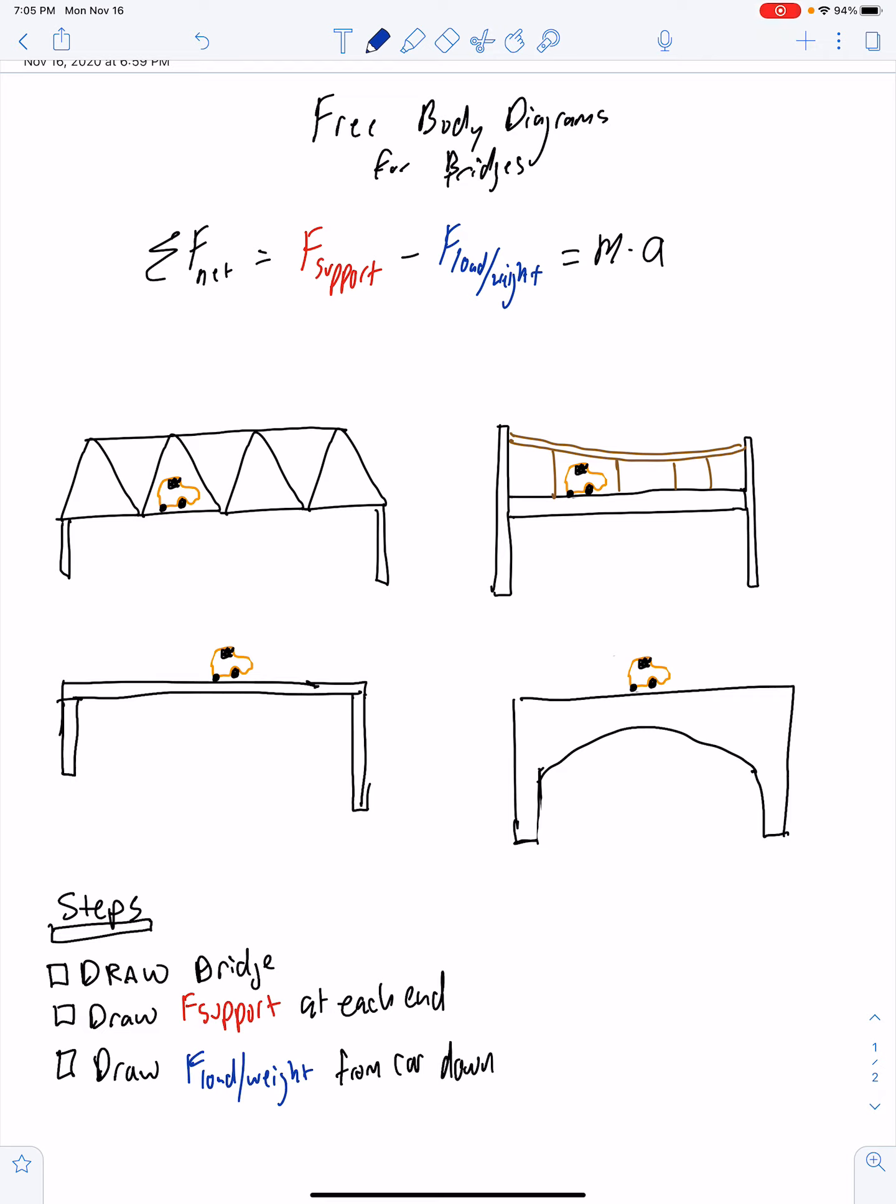We're simply going to show that the sum of the forces is going to add up to zero so that we're in equilibrium. And of course, where does this equation come from? Well, this is Newton's second law, F equals ma. So the sum of our net forces, the net force for us is going to be the support force minus the load and weight.